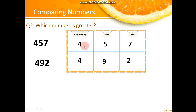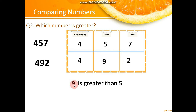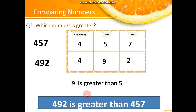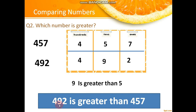We start by comparing the numbers at hundreds place. We see that both have four hundreds — they are the same. So we move towards the tens place. At tens place, there is 5 in the first number and 9 in the second number. Nine is greater than five, so 492 is greater than 457 according to the rules we have learned.